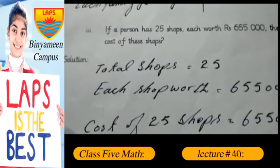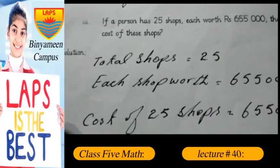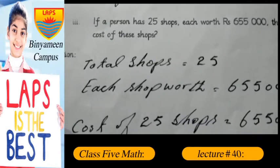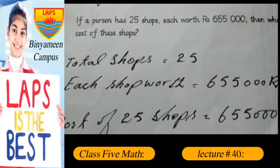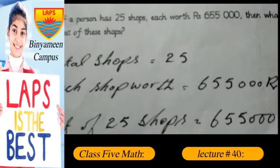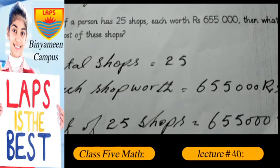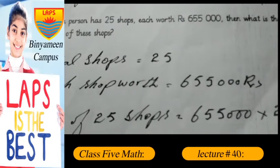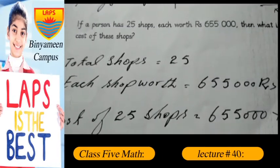Assalamu alaikum, my name is Naim Abbas. I am your math teacher. Today I deliver a lecture on page number 11, part 3. If a person has 25 shops, each worth Rs. 655,000, then what is the total cost of these shops?